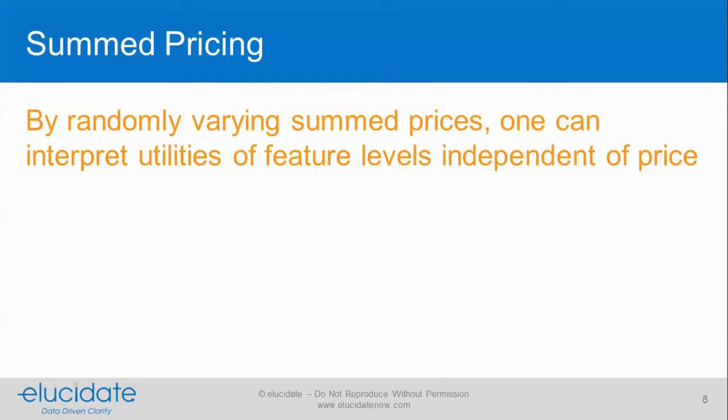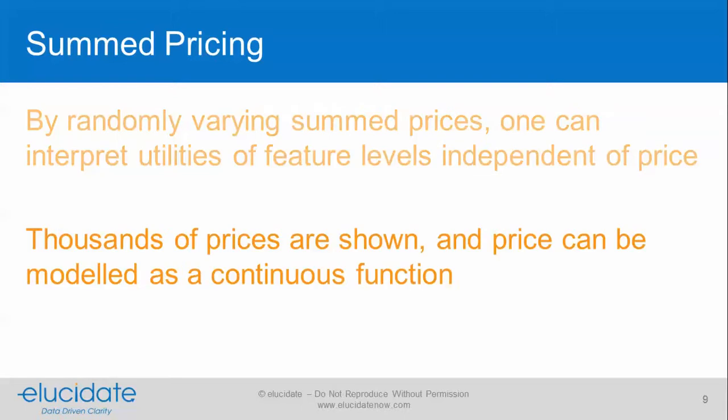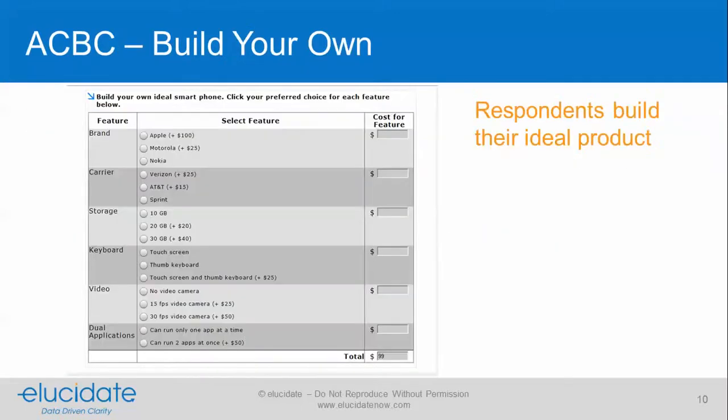By randomly varying summed prices, one can interpret utilities of feature levels independent of price. Thousands of prices end up being shown, and price can be modeled as a continuous function.